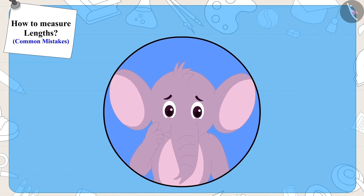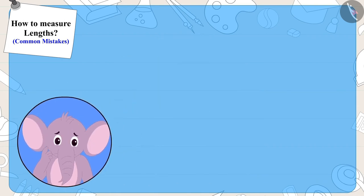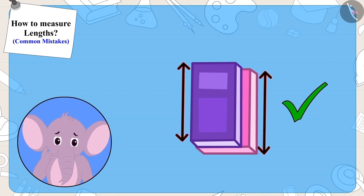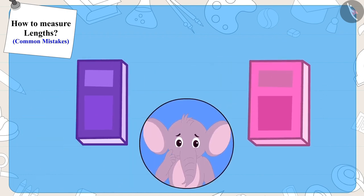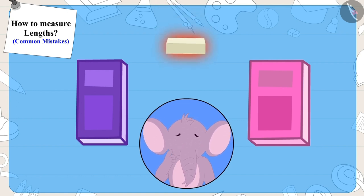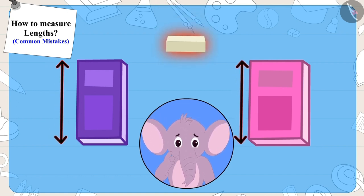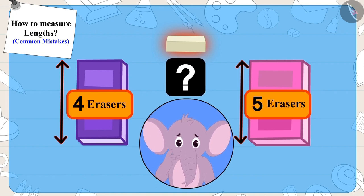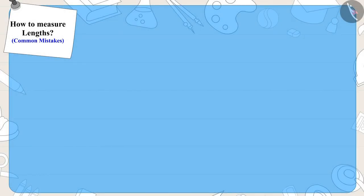Appu was doubtful. He immediately kept one notebook above the other and found that both notebooks were of the exact same length. Appu was shocked — if they had used the same eraser to measure both notebooks, how had the measurements turned out to be different? Children, can you tell me why and how did this happen?